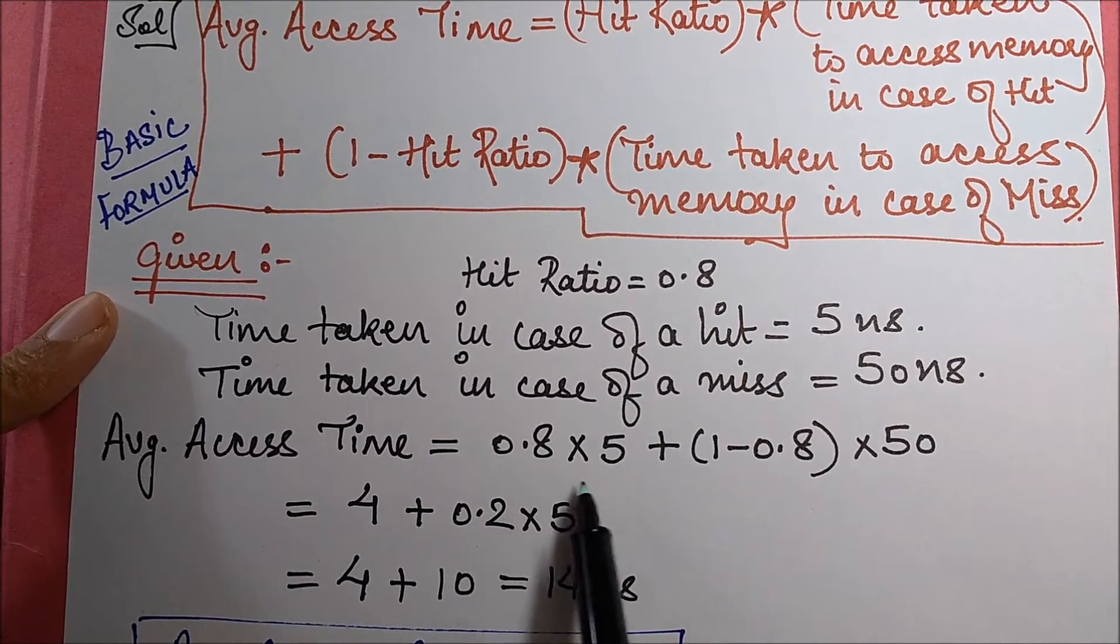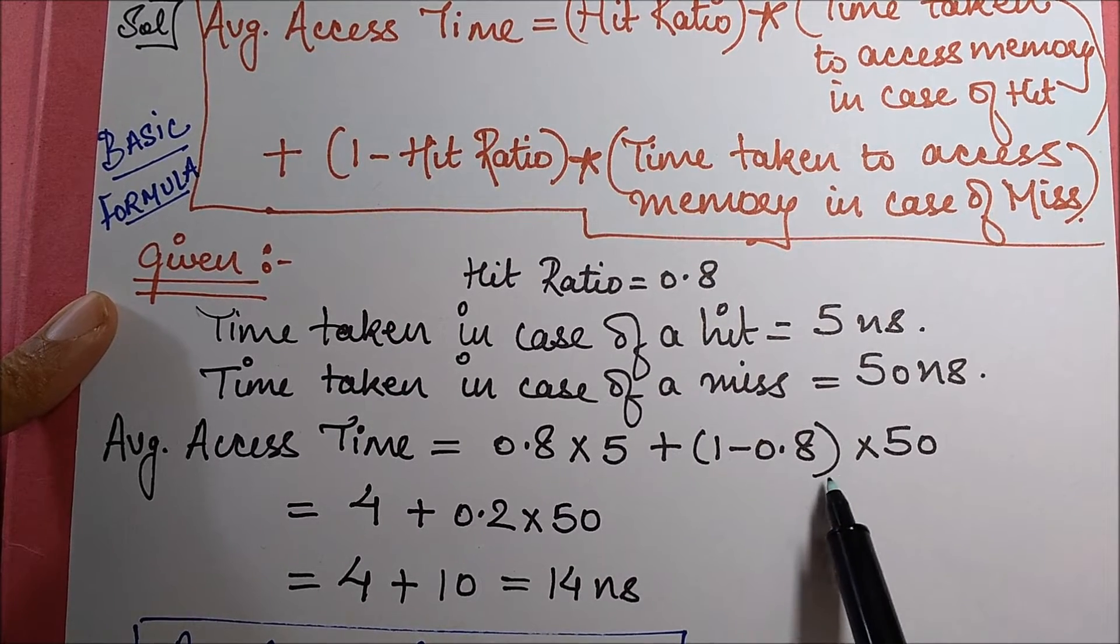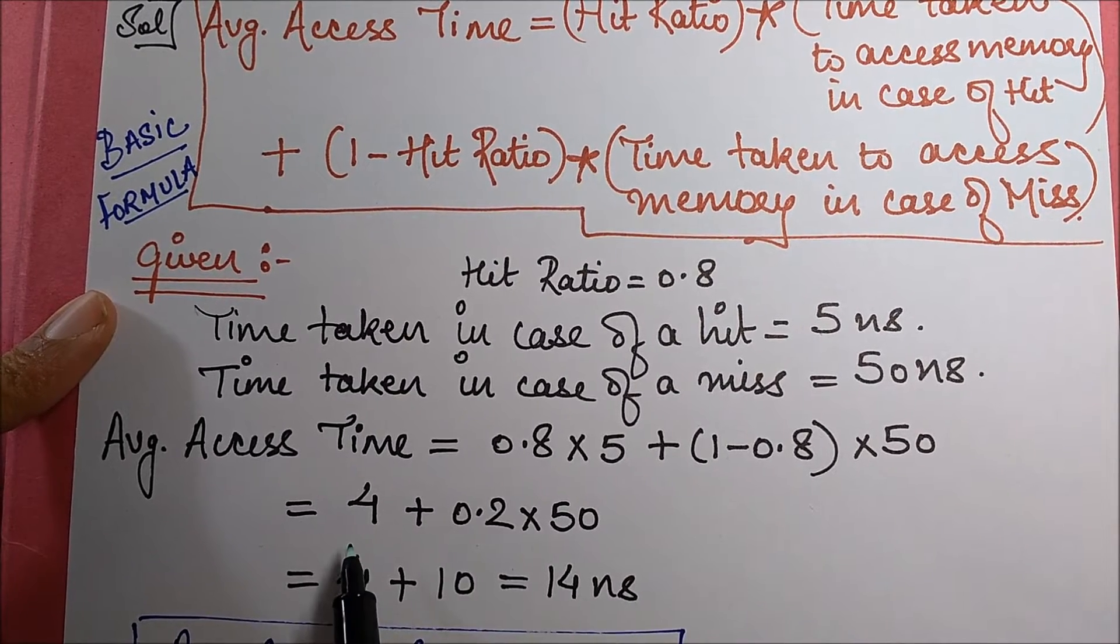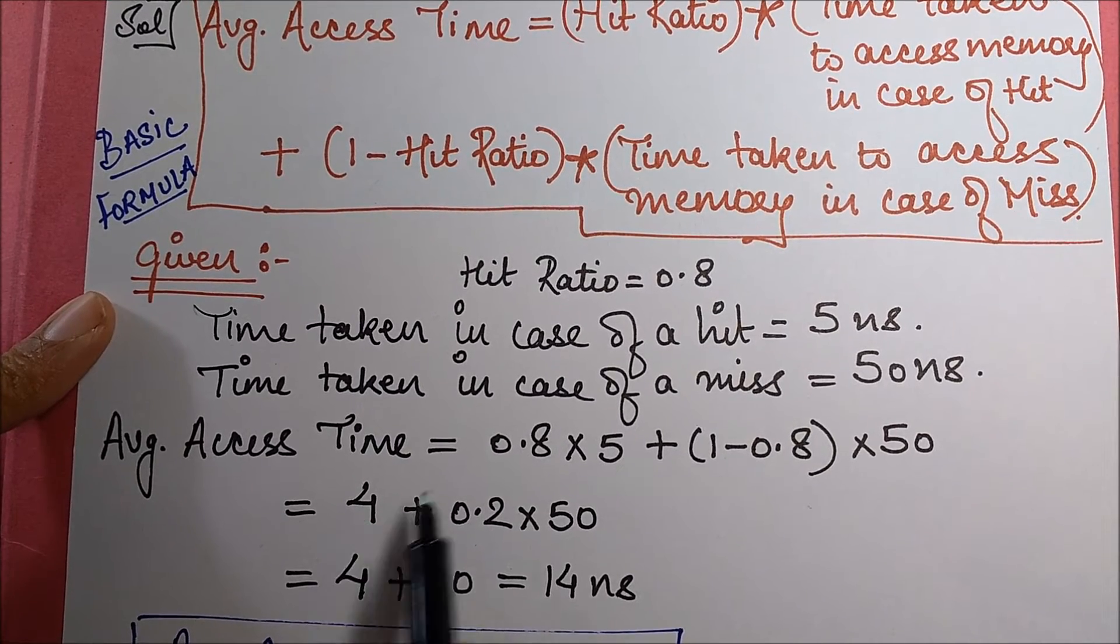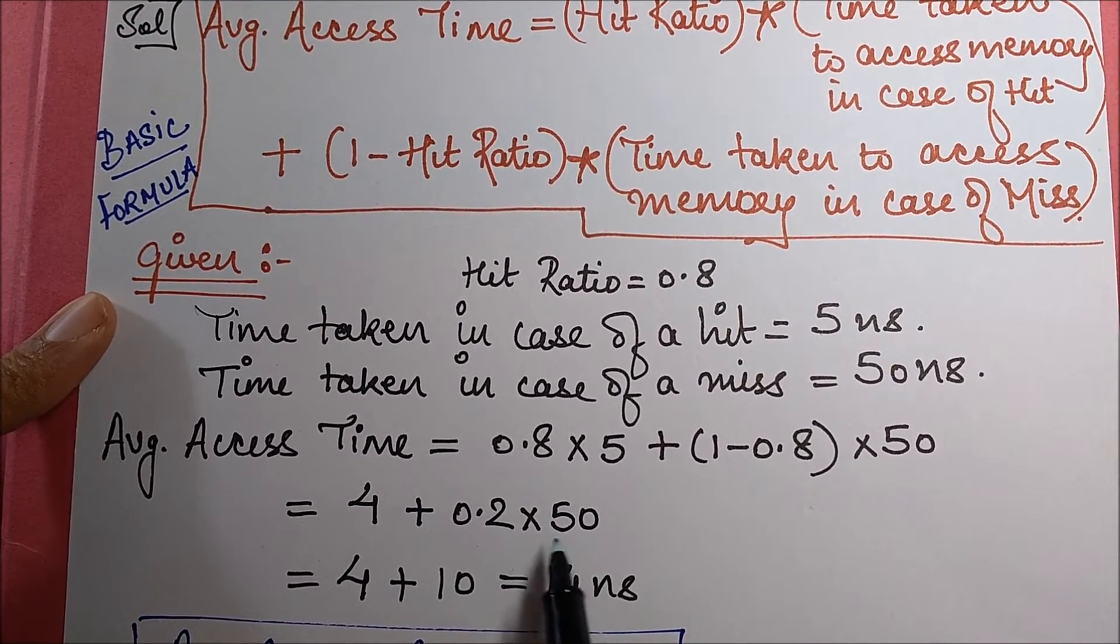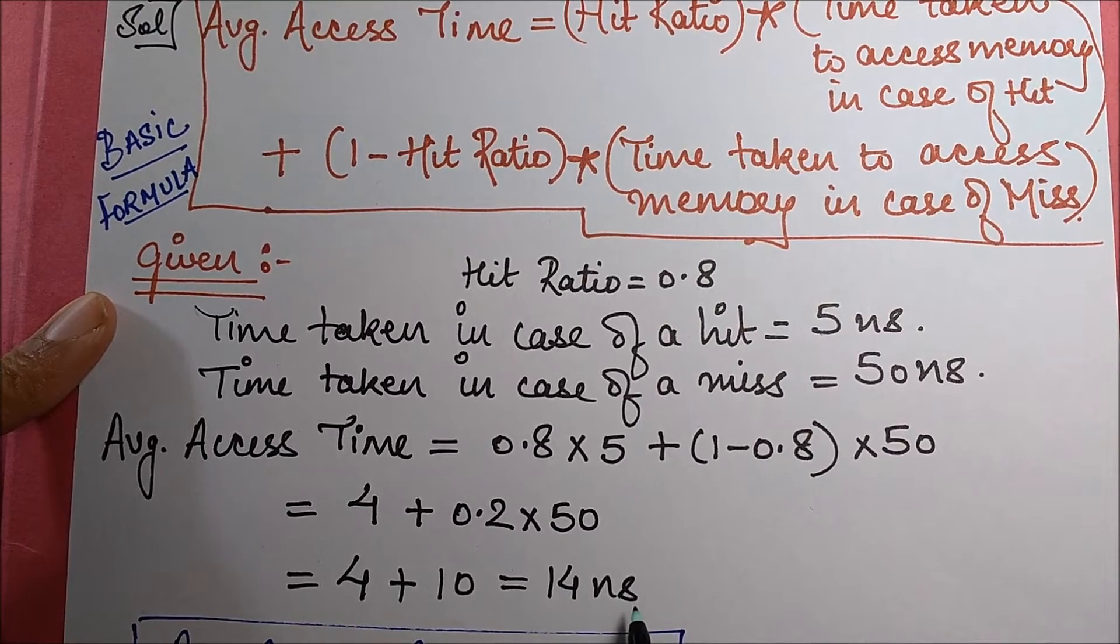The average access time, if you fill in these values in the formula, you get it as 0.8 into 5 plus 1 minus 0.8 into 50. This comes out to be 4.0 plus 0.2 into 50, which comes out to be 14 nanoseconds.